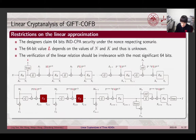We target the encryption function in the message processing phase highlighted in red. The property of the primitive puts some restrictions on the linear approximation. Firstly, since the designers claim 64-bit nonce-respecting CPA security under the nonce-misuse scenario, the data complexity of a valid attack on GIFT-COFB should be lower than 2 to the 64. Secondly, note that the most significant 64 bits of the input for the EK function are masked by the value L, and L depends on the values of N and K, which are unknown. Therefore, the verification of the linear relation should be irrelevant with the most significant 64 bits. To accomplish the search of linear approximations fulfilling these restrictions, we attempt to encode them with Boolean equations.